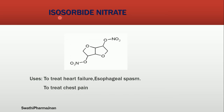Next structure is isosorbide dinitrate. Isosorbide dinitrate contains a 5-membered ring with oxygen, which we call a saturated furan. Two saturated furans are fused at two points, and ONO2 is attached at the third position of both furan rings. That is the structure of isosorbide dinitrate. It is used to treat heart failure, esophageal spasm, and chest pain.